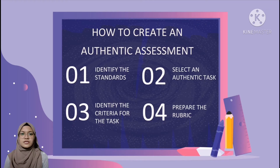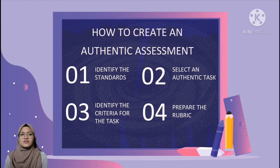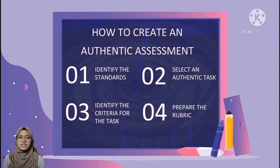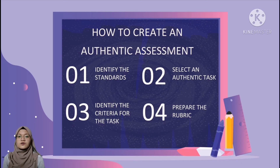Step three is to identify the criteria for the task. Ask yourself: what does good performance on this task look like, or how will I know they have done a good job? Criteria are indicators of good performance on a task. Step four is to create the rubric — once you have identified the criteria as indicators of good performance, you decide whether to consider the criteria analytically or holistically.